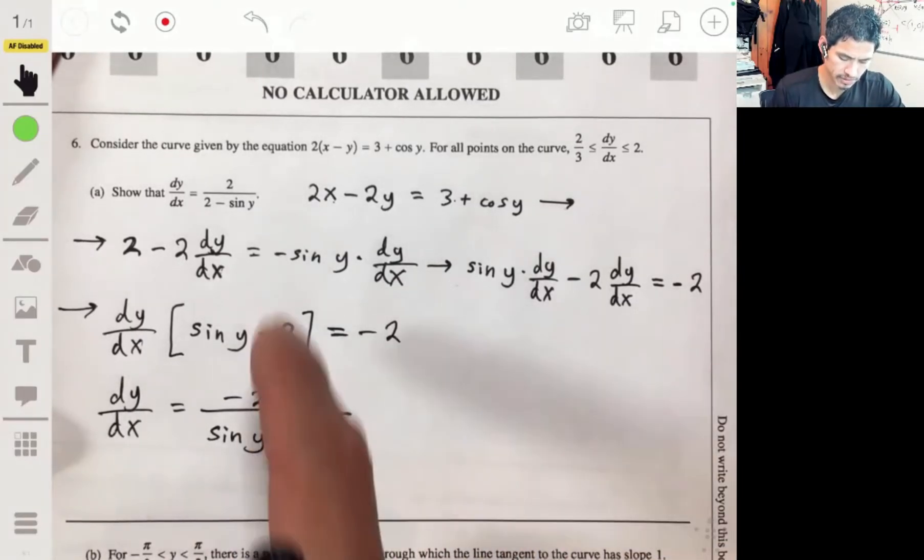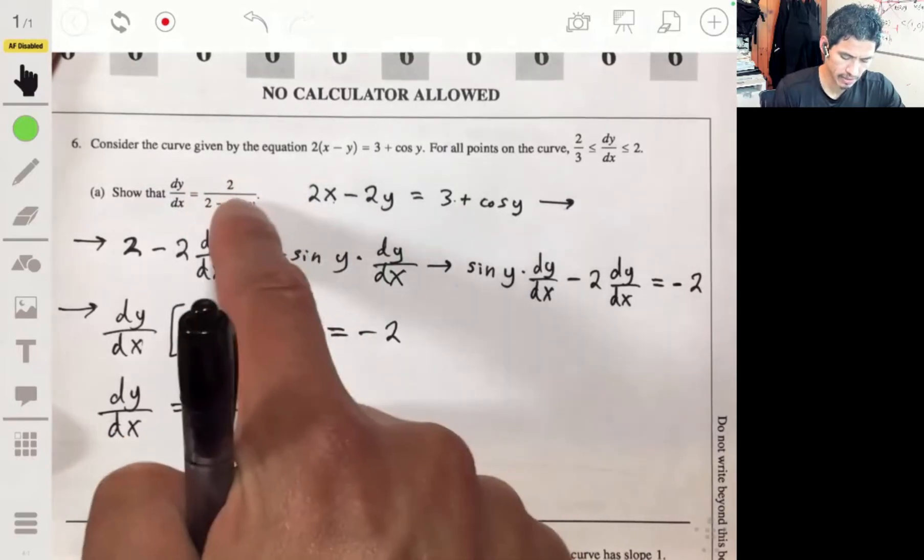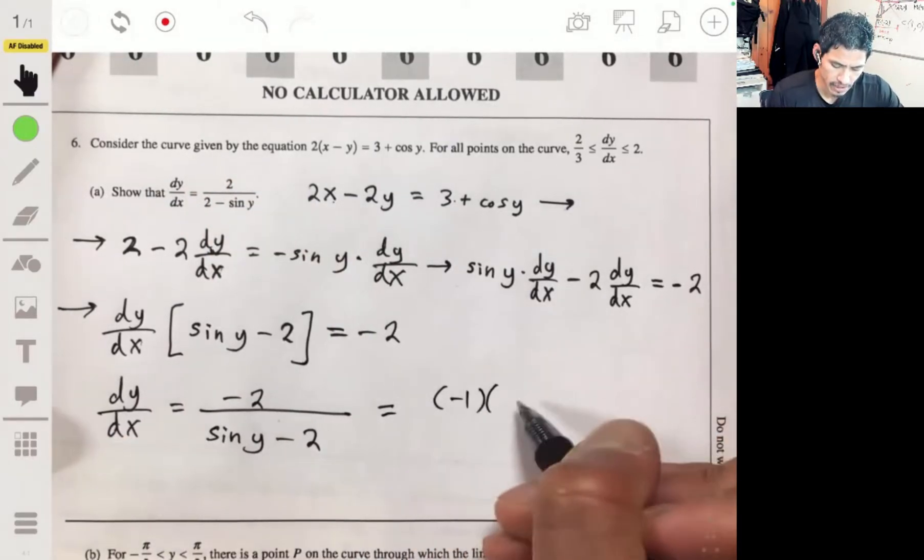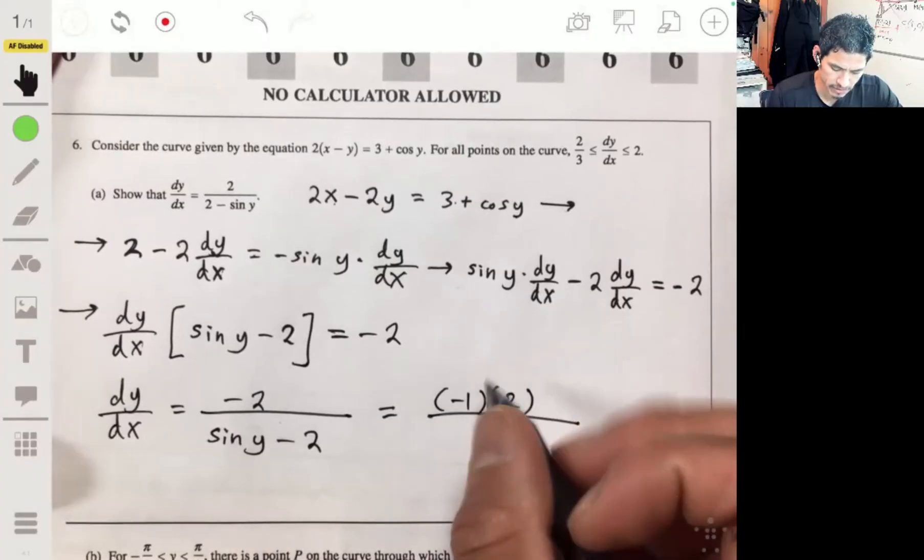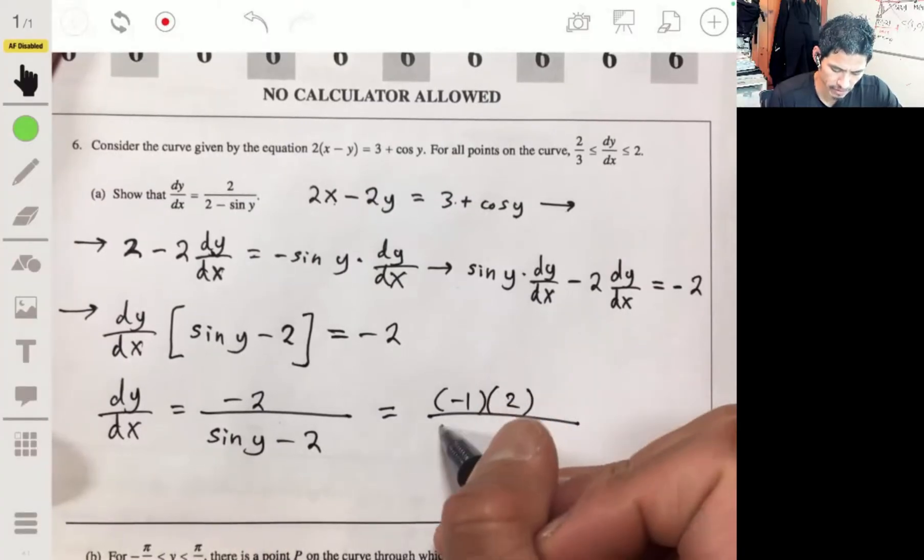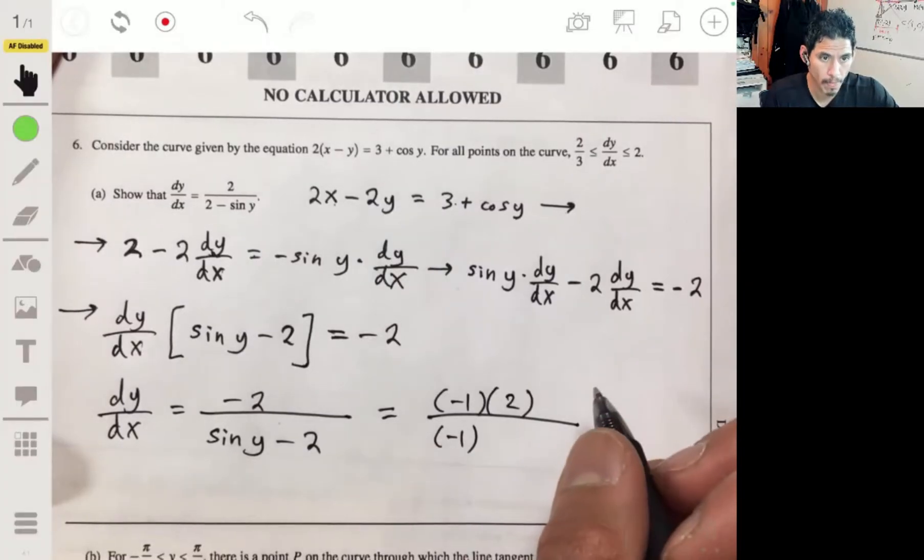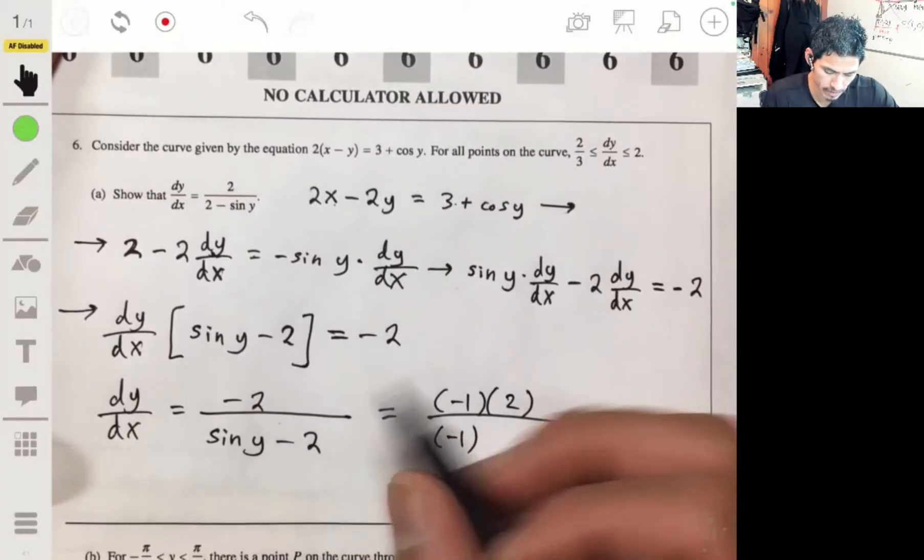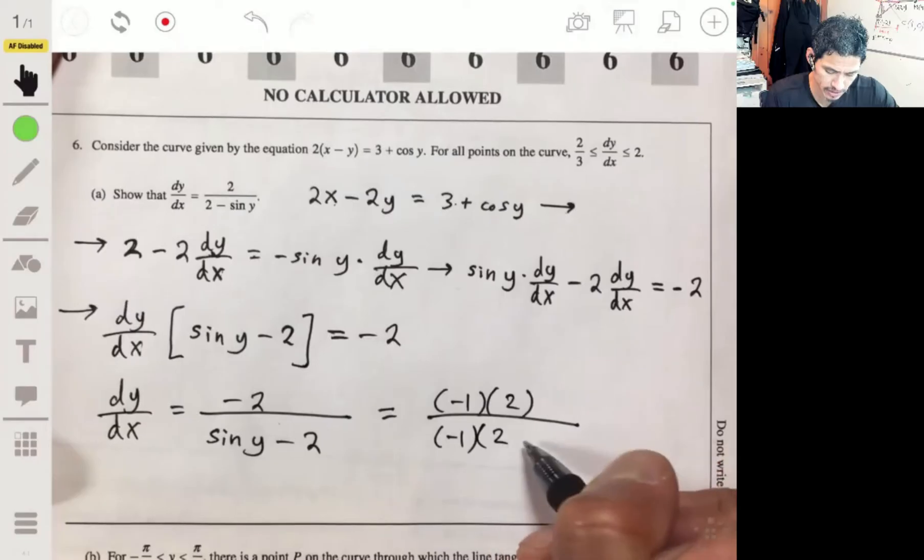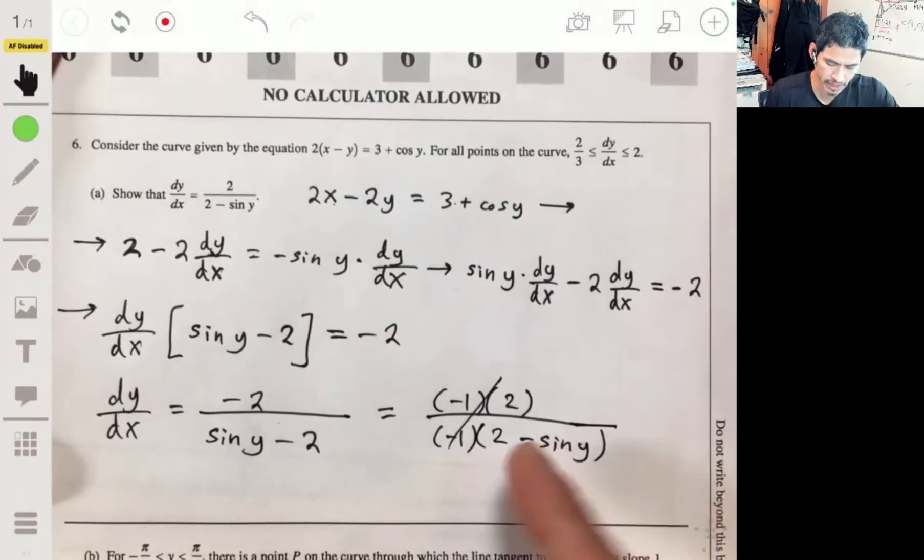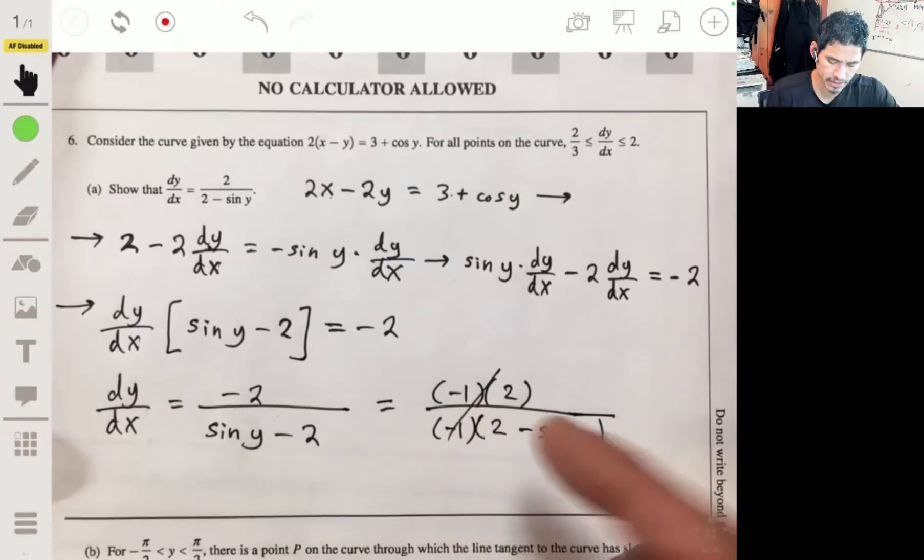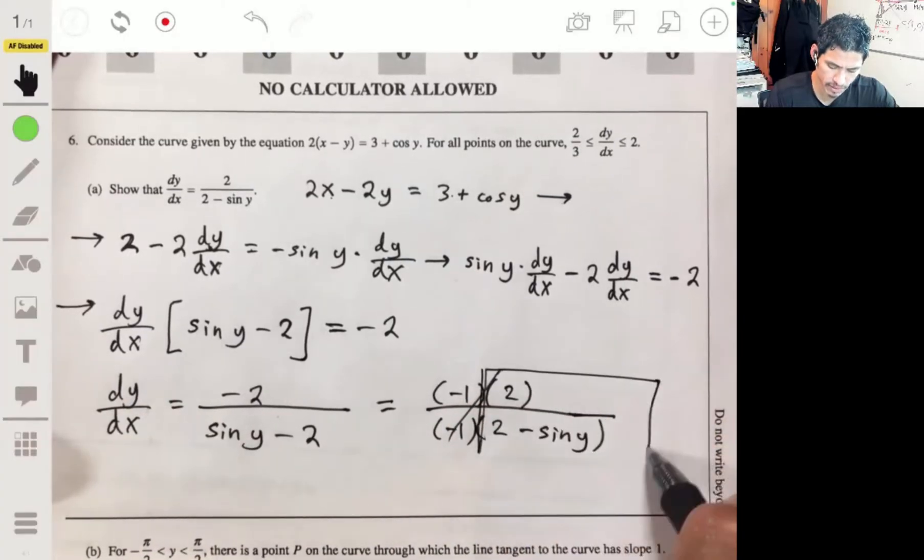And then we're going to divide by the sine of y minus two. And then we'll just rewrite this by factoring out a negative one. They usually have it some weird way. So we'll have a negative one times positive two minus the sine of y. And those will cancel. Then we have dy/dx equal to two over two minus the sine of y.